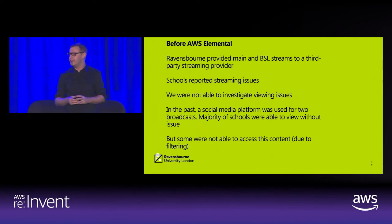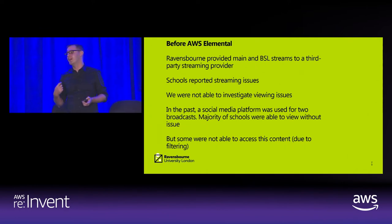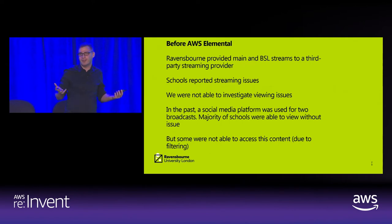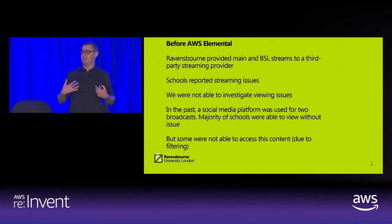Around summer 2017, the relationships changed and it was decided we would be using social media platforms. We tried this out and the majority of schools were able to watch. But we had an issue with school filtering — schools couldn't get the live streams because of filtering issues somewhere along the line. In the UK education system, some places have well-equipped IT departments; other places will have one person shared between 30 or 40 schools. We knew there were schools out there not able to watch this amazing educational content, and that was a very difficult position to be in.